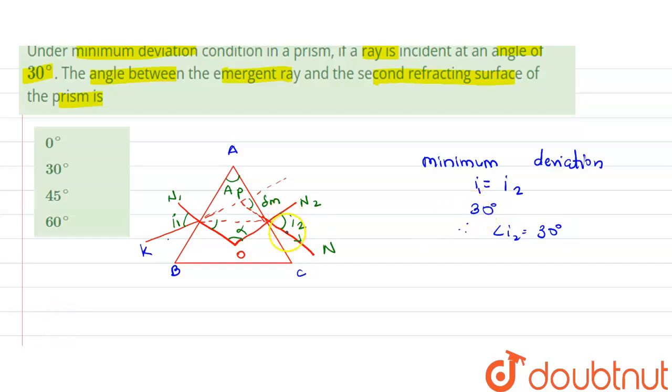And we know that this angle I2 is the angle between the normal to the prism and emergent ray. So it is angle between normal to the prism and the emergent ray.